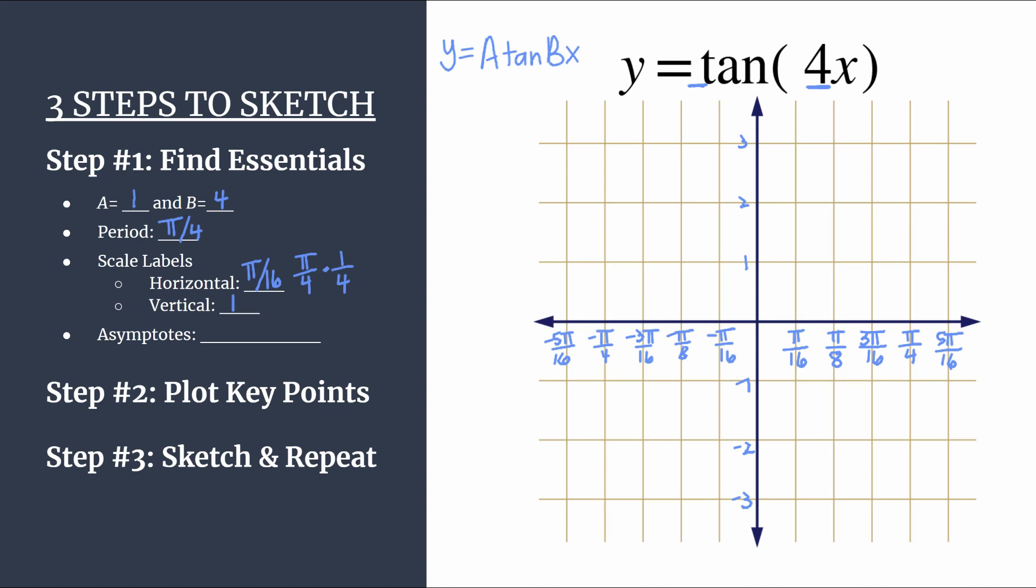So we've got our grid labeled up. The last thing we want to do before we move into plotting our key points is find our asymptotes. Now there are two ways you can go about this. Since this is a basic tangent graph, you can use the formula. So that's x equals pi over 2b. So pi over 2 times our b is 4, so that'll be 8 plus pi over bk. So pi over 4k. And this is where k is an integer. I like to use the shorthand k belongs to the set of all integers. And this is an equation that's going to generate every single asymptote that's on our graph.